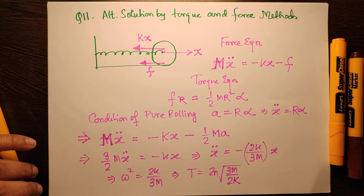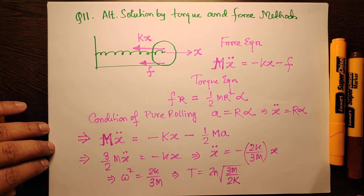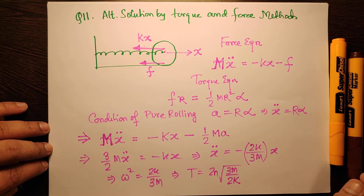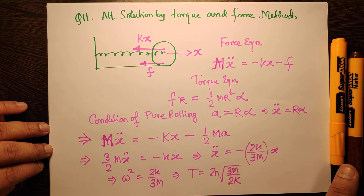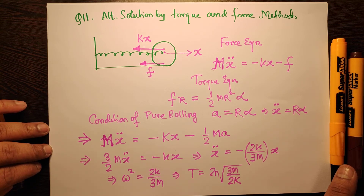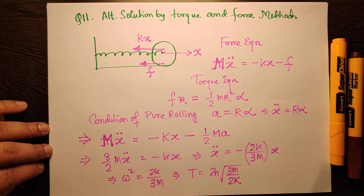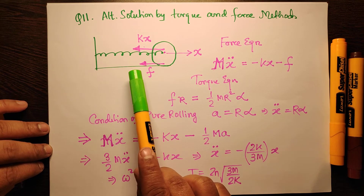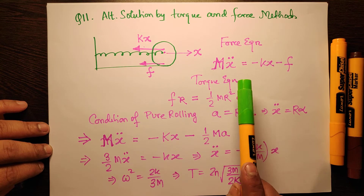Here we are giving a different solution to the last problem — the pure rolling one. We are going to solve it by the traditional force and torque method. I have chosen the force kx, and there is a friction force F acting on this.